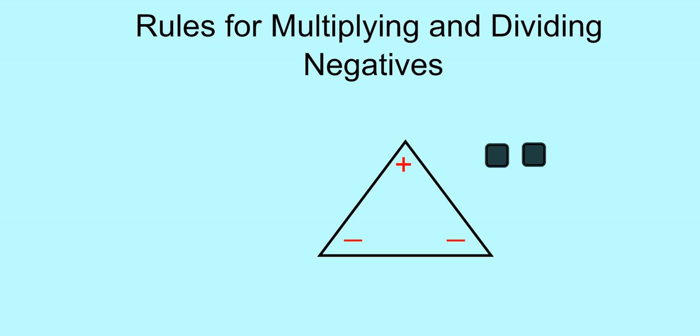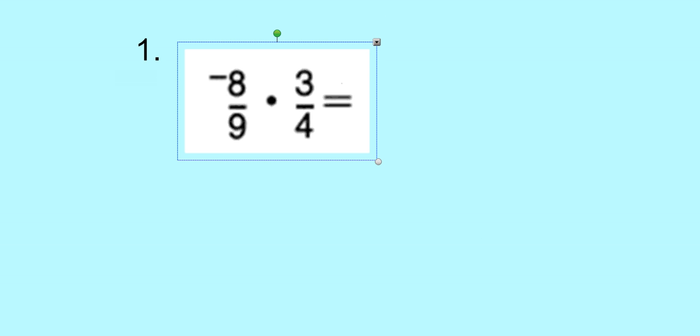Let's get started on the problems. Rules for multiplying and dividing negatives: if you have a positive times a negative or divided by a negative, we get a negative. If you have two negatives and you're multiplying or dividing them, you get a positive. Remember those rules. Two negatives when multiplying or dividing give us a positive. Opposite signs give us a negative.